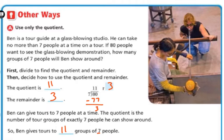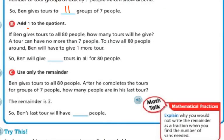Now, it doesn't say this in the problem, but we're going to continue on to find out what do we do with the remainder of the three. Well, if you add one to the quotient, then those three people can go on the next tour. There won't be seven in that group. There'll just be three, right?